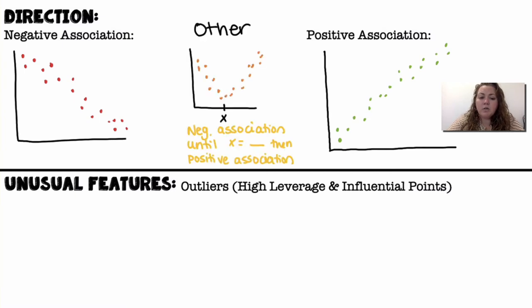If it's going up from left to right, then it has a positive association. Sometimes you might see something like this where it's going down and then it's going up. So, it has a negative association until x equals whatever number x is there, and then a positive association.